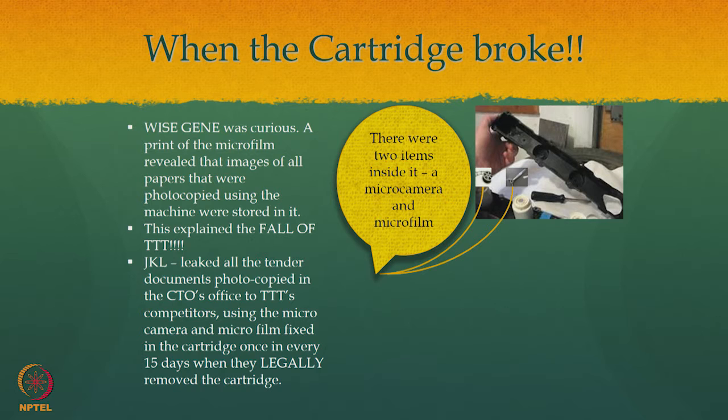Welcome to session 2. Last session we stopped with my heroine Weisgene pulling out the cartridge, and the cartridge fell down and broke. When it broke, as seen on the slide, there were 2 items inside it - she found a micro camera and a micro film protruding out of it.